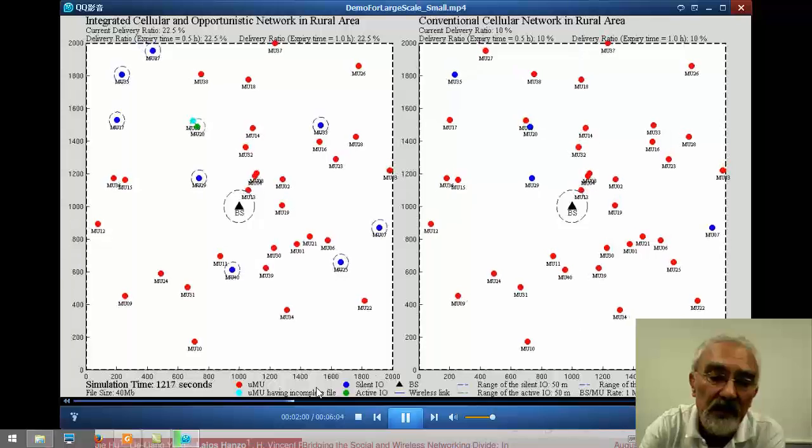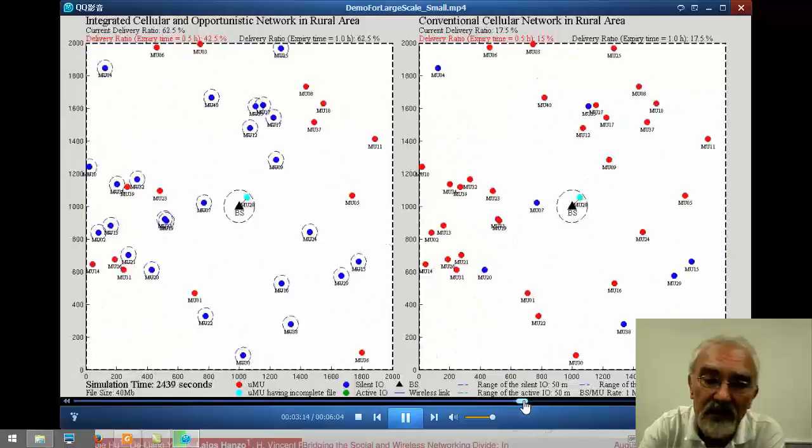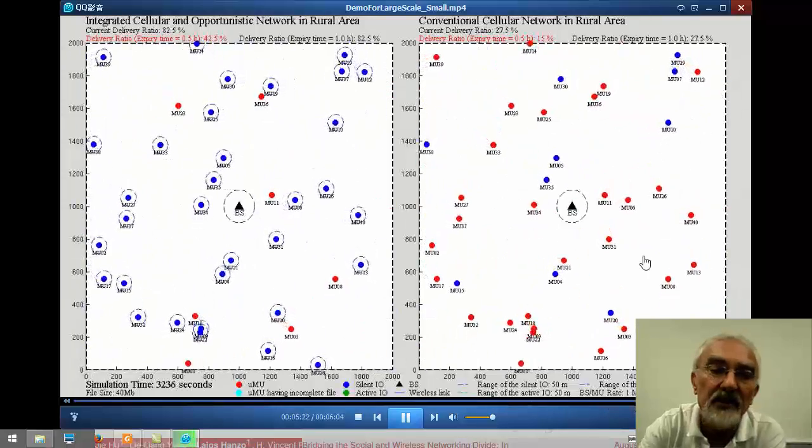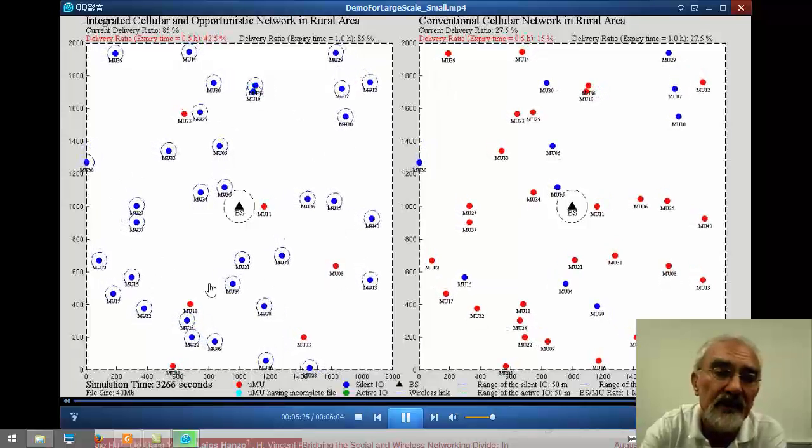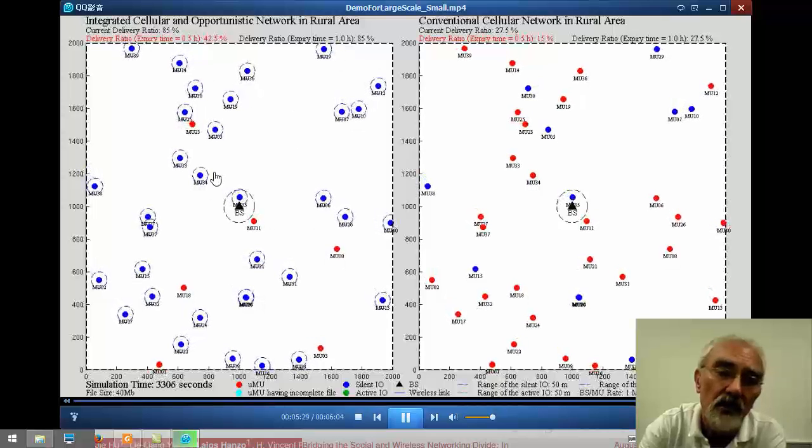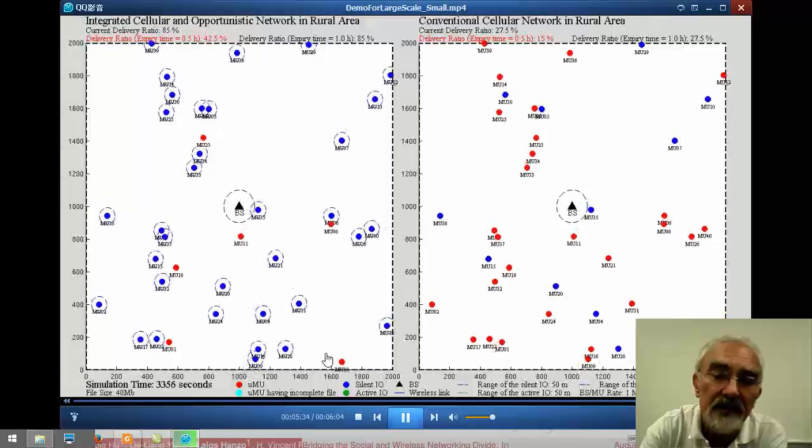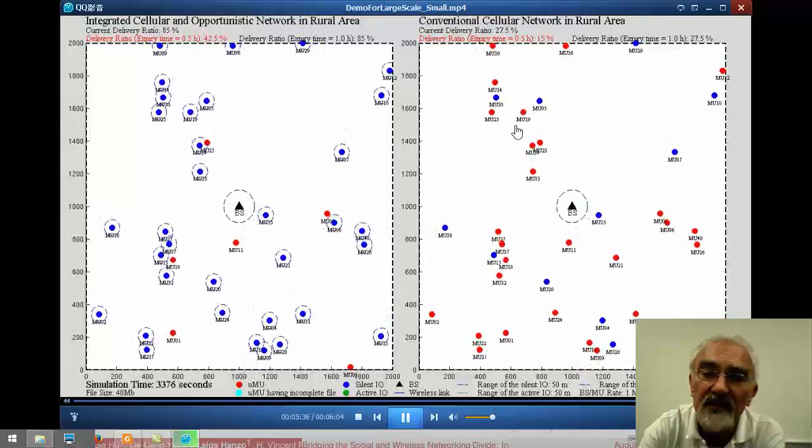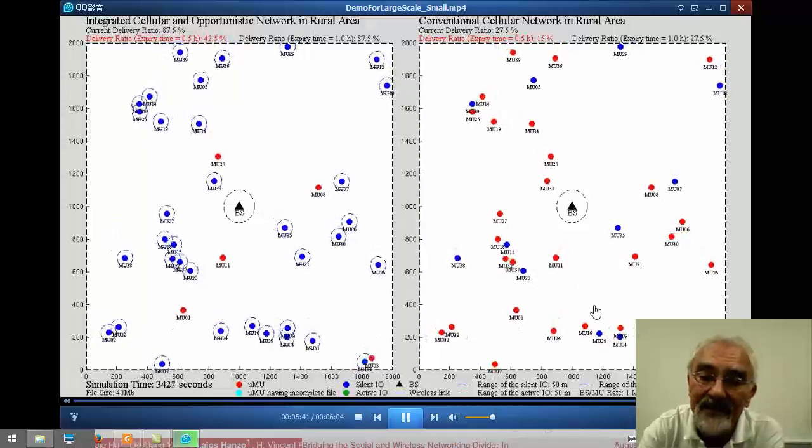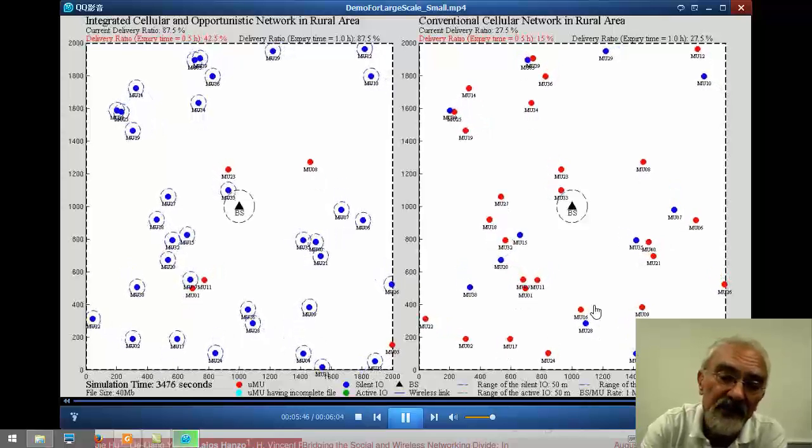So I'd like to fast-forward now for a moment, almost to the end of the demo, and just take a closer look at what the situation is. So on the left-hand side, the social network-aided system indicates that literally almost all of the mobiles succeeded in downloading the contents, whereas on the right-hand side, there's still only a limited fraction of the mobiles. And so this really shows very clearly and explicitly the benefits of social networking.